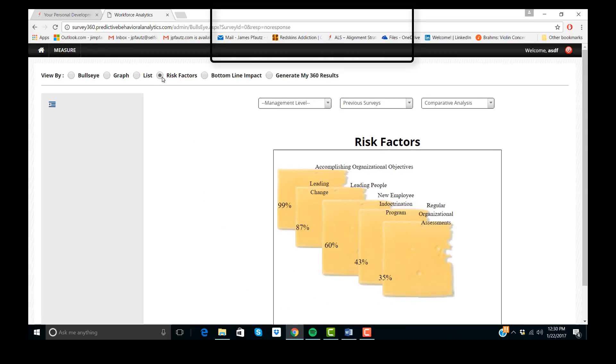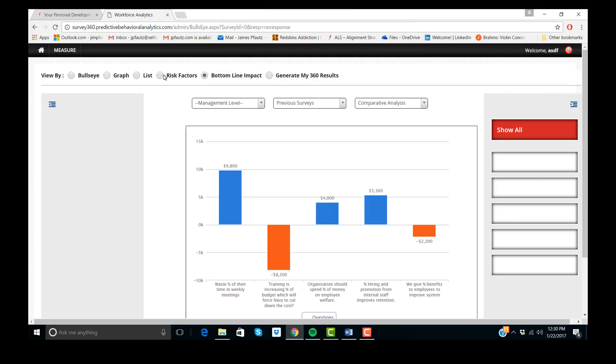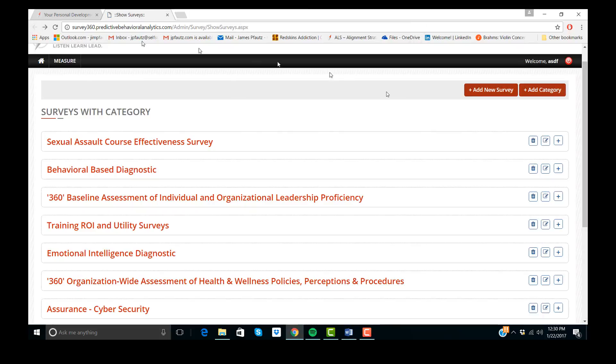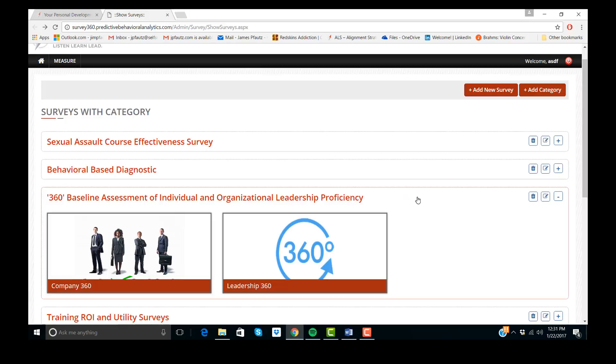Bottom line impact and risk factors. The bottom line of the organization and the overall risk factors. That's where they come into being. So what we need is an ability to do two things, once again, to measure the organization and to help the individual develop.